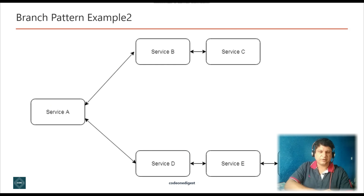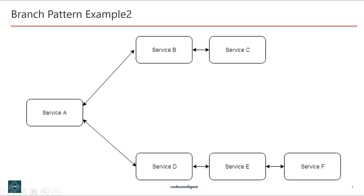Now let's see another example of this design pattern. The branch pattern works as an extension of the aggregator pattern and can call different service chains in parallel. In the branch pattern implementation example, service A is called by the client and can act as an aggregator, calling service chains to compose the response. Alternatively, based on the request, a specific service chain is called, thereby acting as a proxy pattern.